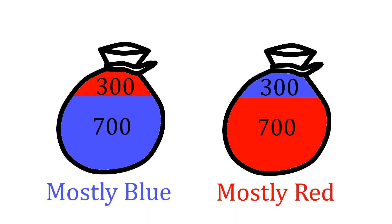Here's a simple example. Suppose I have two bags, each with a thousand marbles in it. One bag has 700 red marbles and 300 blue marbles, and the other has 700 blue marbles and 300 red marbles. We'll call these the mostly red bag and the mostly blue bag. Unfortunately, I left one at home and only brought one with me today, and I don't know which one I've got.